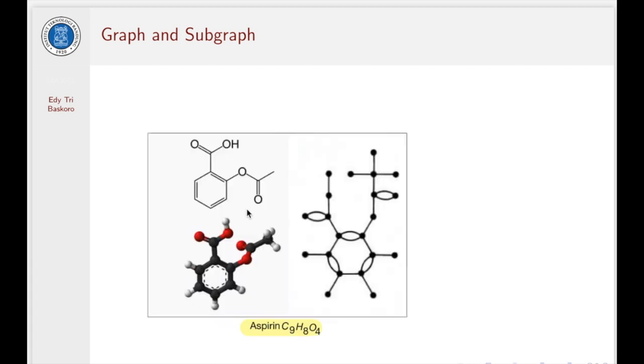The following diagram or a graph represents aspirin with the labels for carbon, hydrogen, and oxygen have been left out. And this is also a graph.